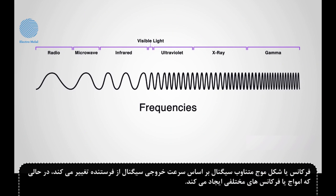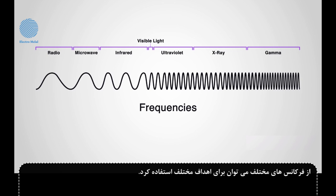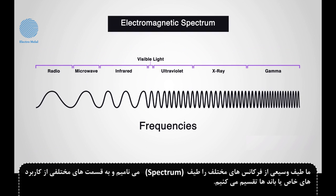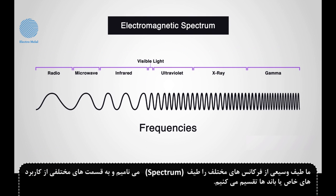The frequency of the signal changes based on how fast the signal from the transmitter is output, creating waves with different frequencies. Various frequencies can be used for different purposes. We call a range of different frequencies a spectrum, and these are divided into areas of specific usage or bands.